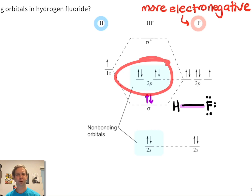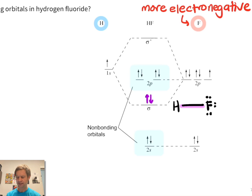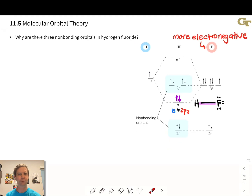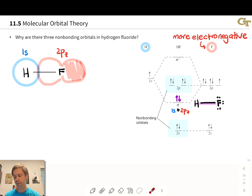The 2p orbitals on fluorine are more interesting. With three p orbitals along x, y, and z — and the z-axis as the internuclear axis — the 2pz orbital is pointed directly at the hydrogen atom, so we can create a standard-looking sigma bonding orbital through constructive overlap of hydrogen 1s and fluorine 2pz. This is an sp combination, which makes it slightly unique, but it's a standard-looking sigma orbital.